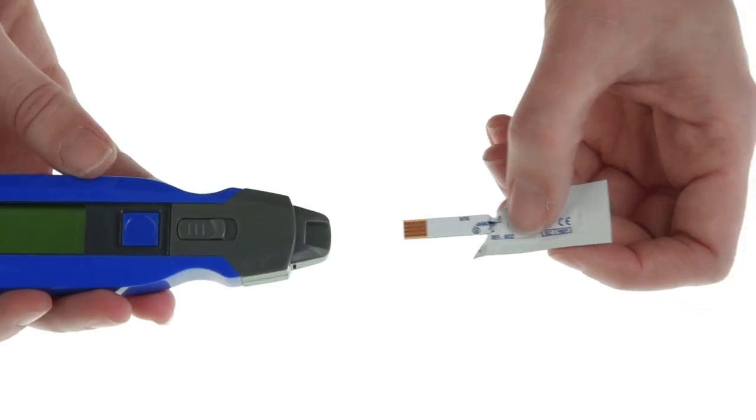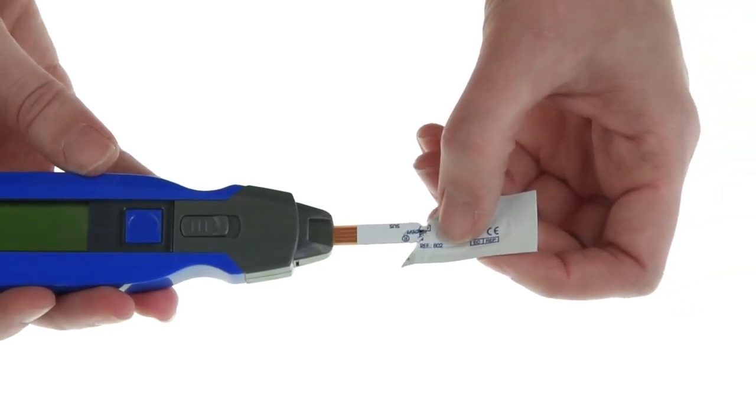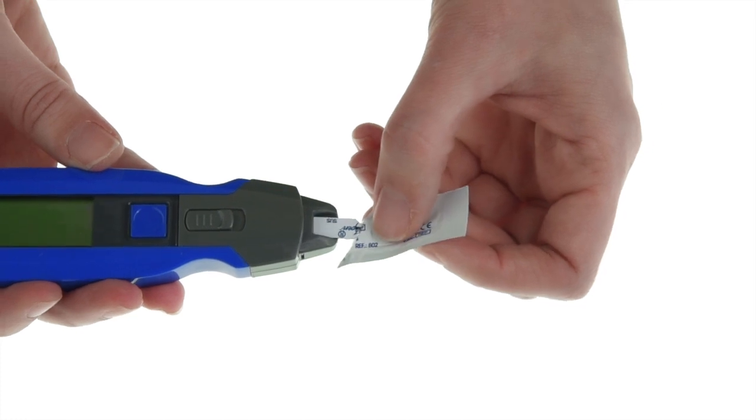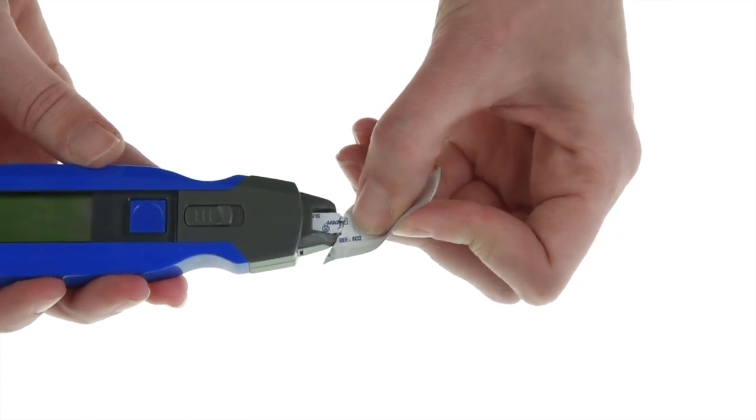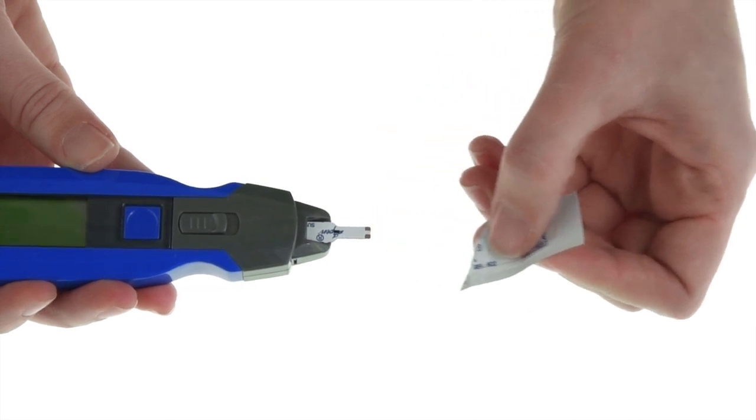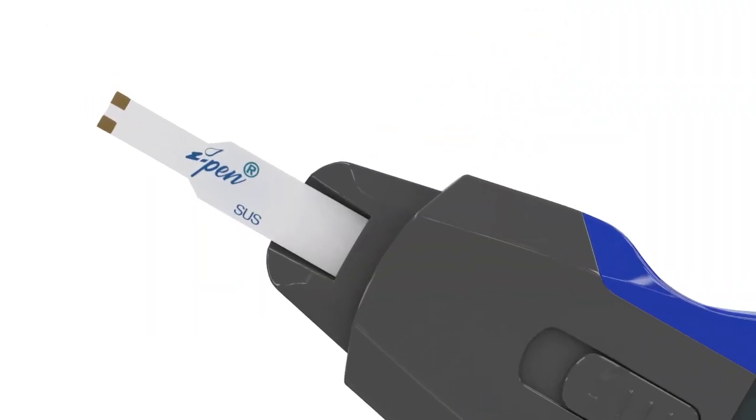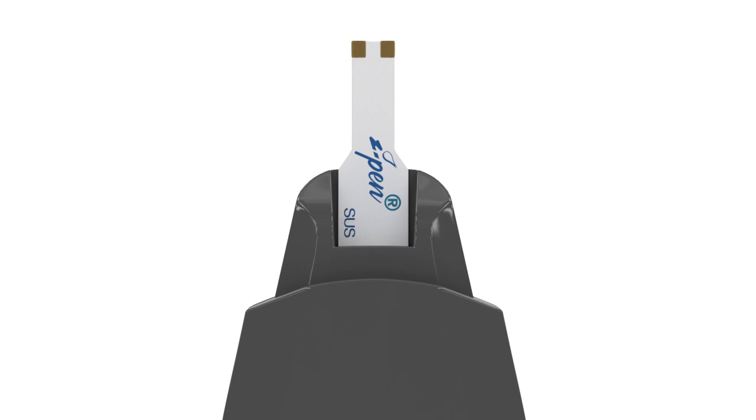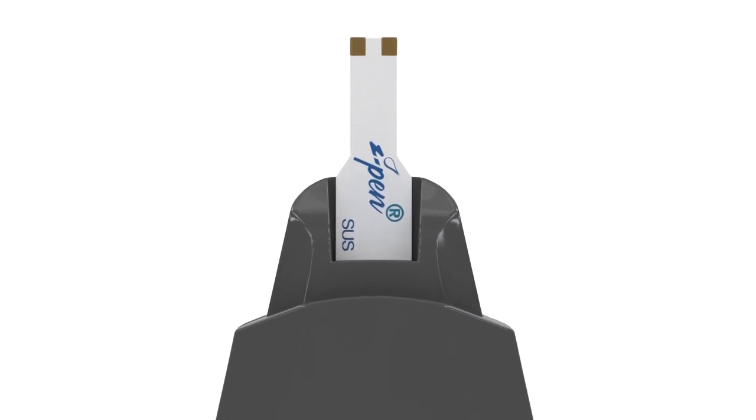While holding the single-use sensor by the unopened package, securely load the iPen by inserting the thicker end of the sensor firmly into the opening of the iPen. The sensor will function with the writing up or down. Take note to fully insert the sensor so that its shoulders line up correctly with the device. This ensures proper internal contact for all the electrodes.